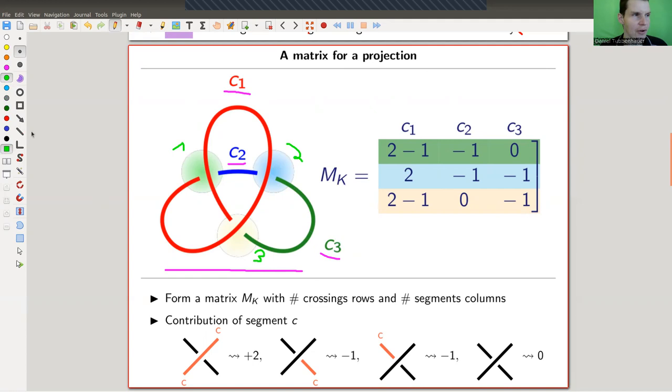And you put everything in the matrix in the following way. So matrix associated to a knot. Crossing one, crossing blue, crossing green, crossing blue, crossing whatever orange, segment one, segment two, segment three, and in general, you get this huge square matrix, a number of crossings, number of segments. And you just read off a local contribution and sum of all of them.